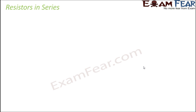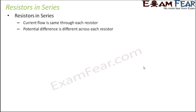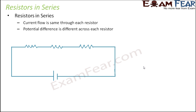We will discuss resistors in series. So what do we mean by resistors in series? When the resistors are connected — let's say there are three resistors R1, R2, R3 — when we connect them end to end, that means the end of the first resistor is the beginning of the second, and the end of the second is the beginning of the third. When you connect them like this end to end, they are said to be in series.